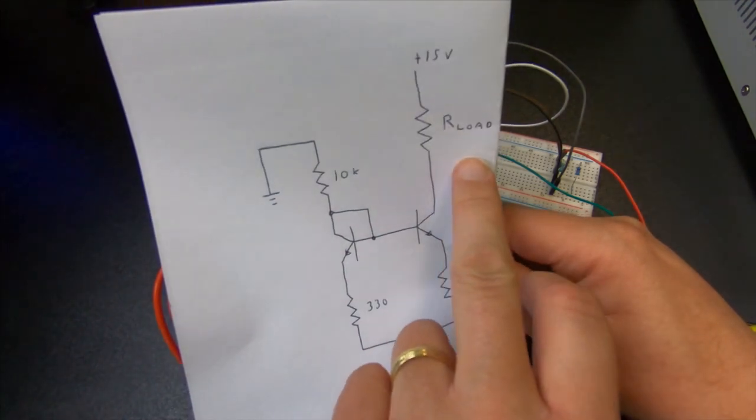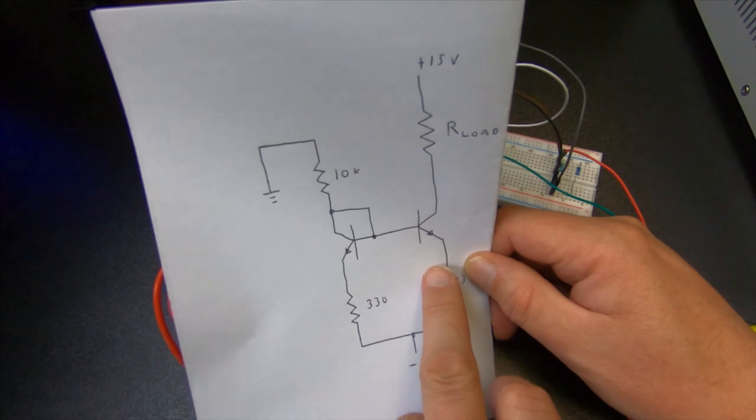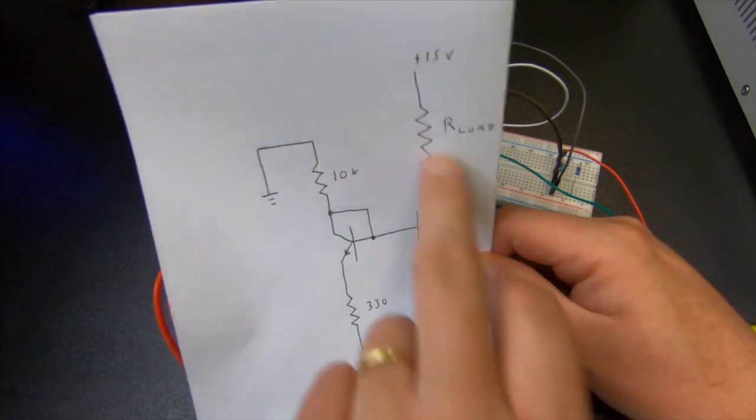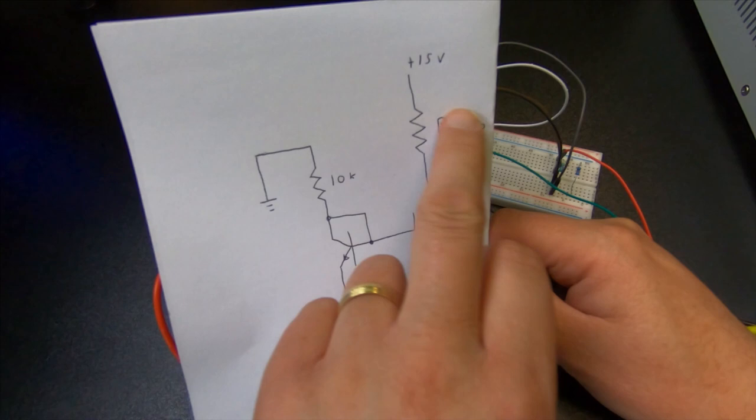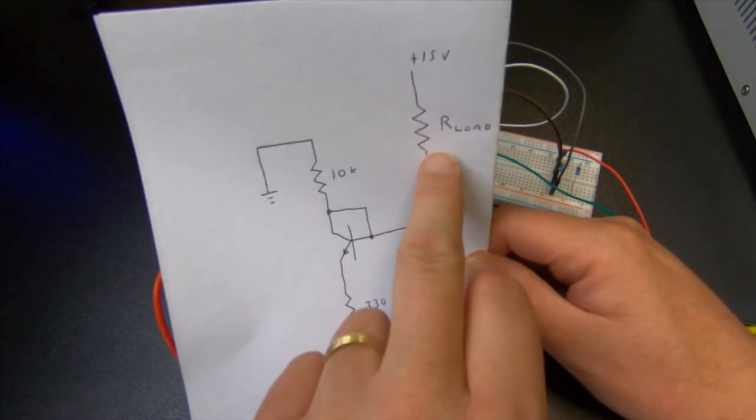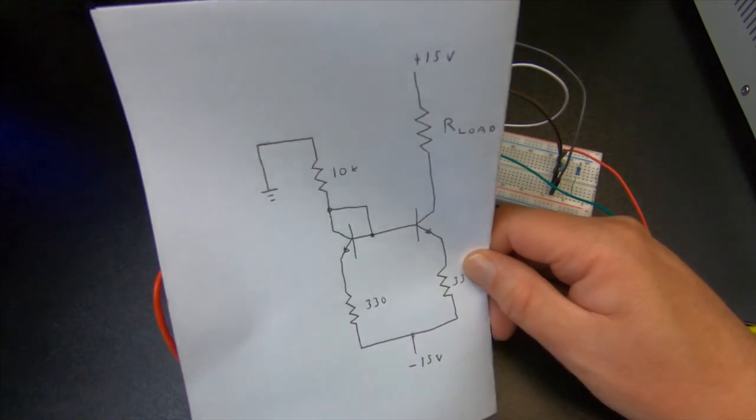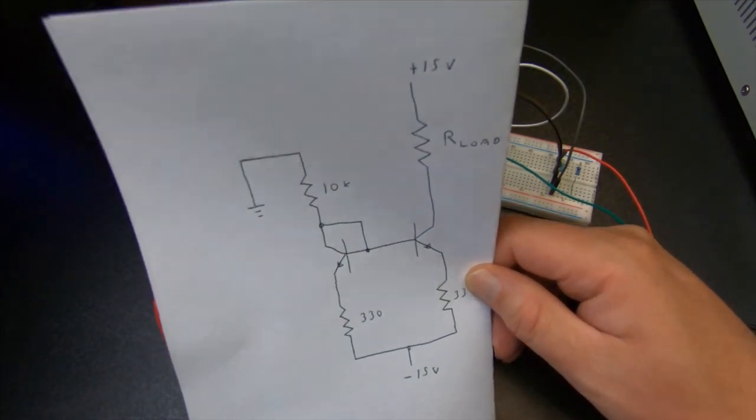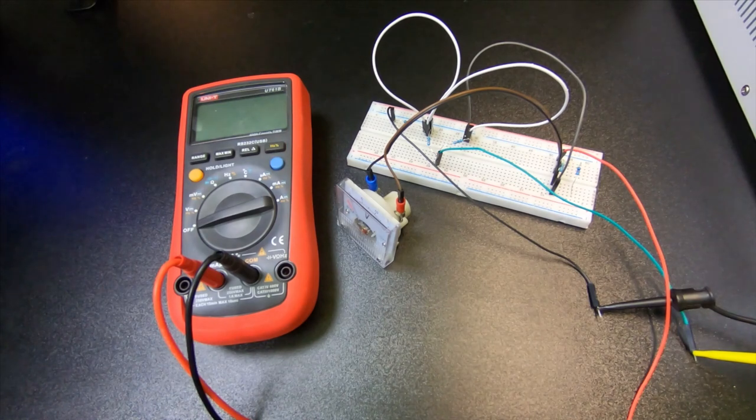And then you can have the idea with constant current sources that even if we swap out this load to different values, it will adjust the voltage over the load so that we get the same current. So let's have a look and see it in operation.